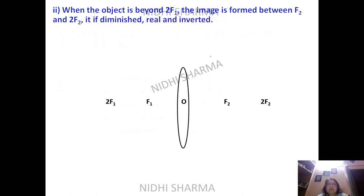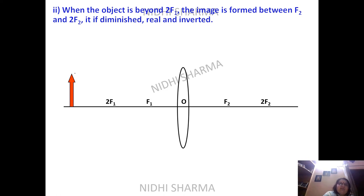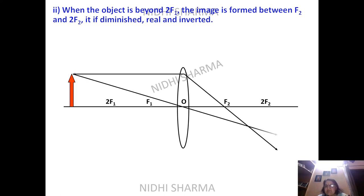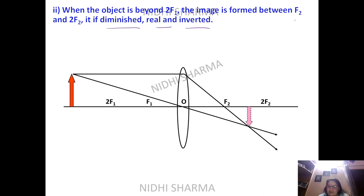The second case: when the object is beyond 2F1. The principal axis is drawn and the object placed beyond 2F1. A ray coming parallel passes through focus; another ray passes through the optical center. The image is formed between F2 and 2F2, and it is diminished, real, and inverted.